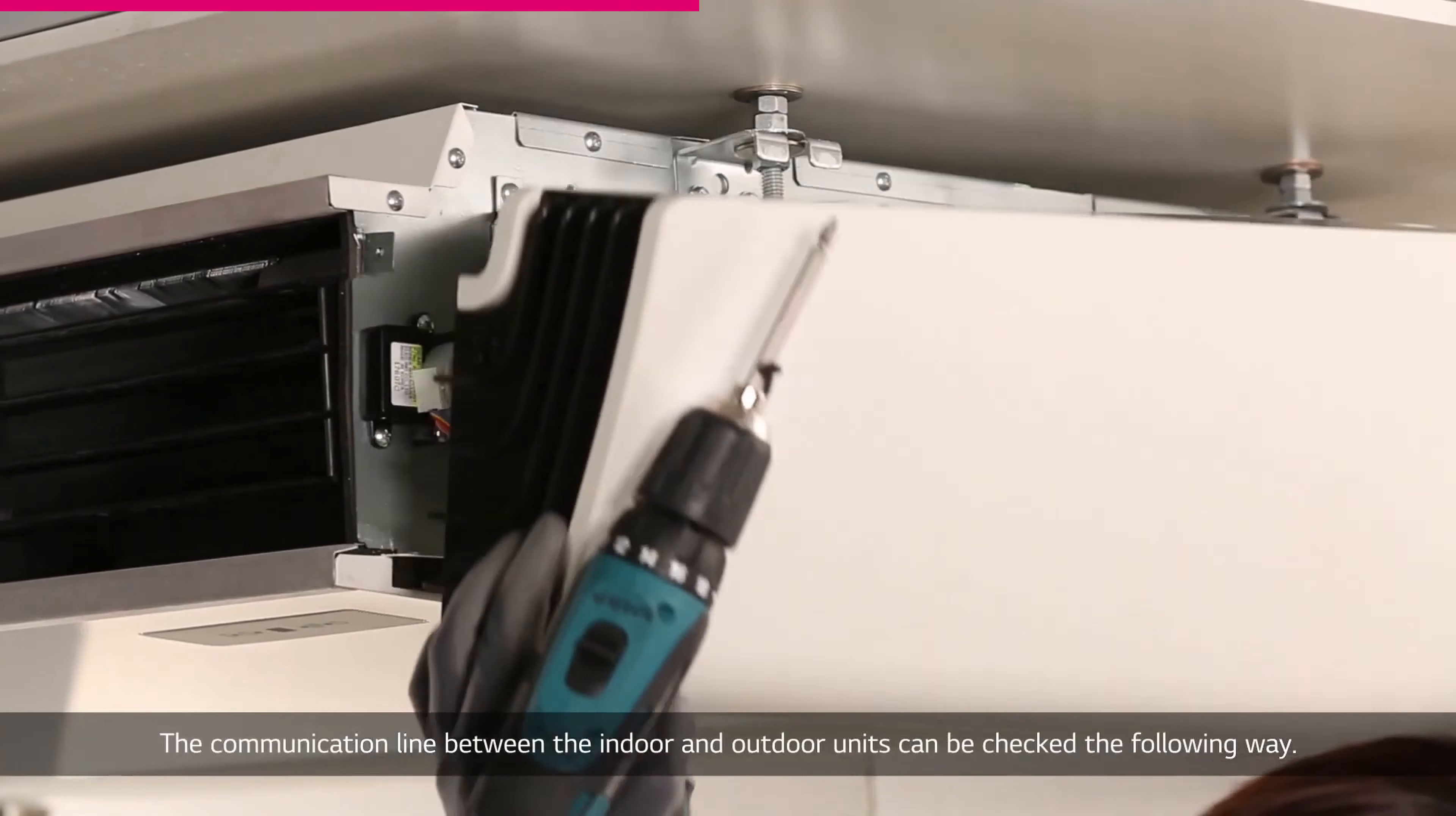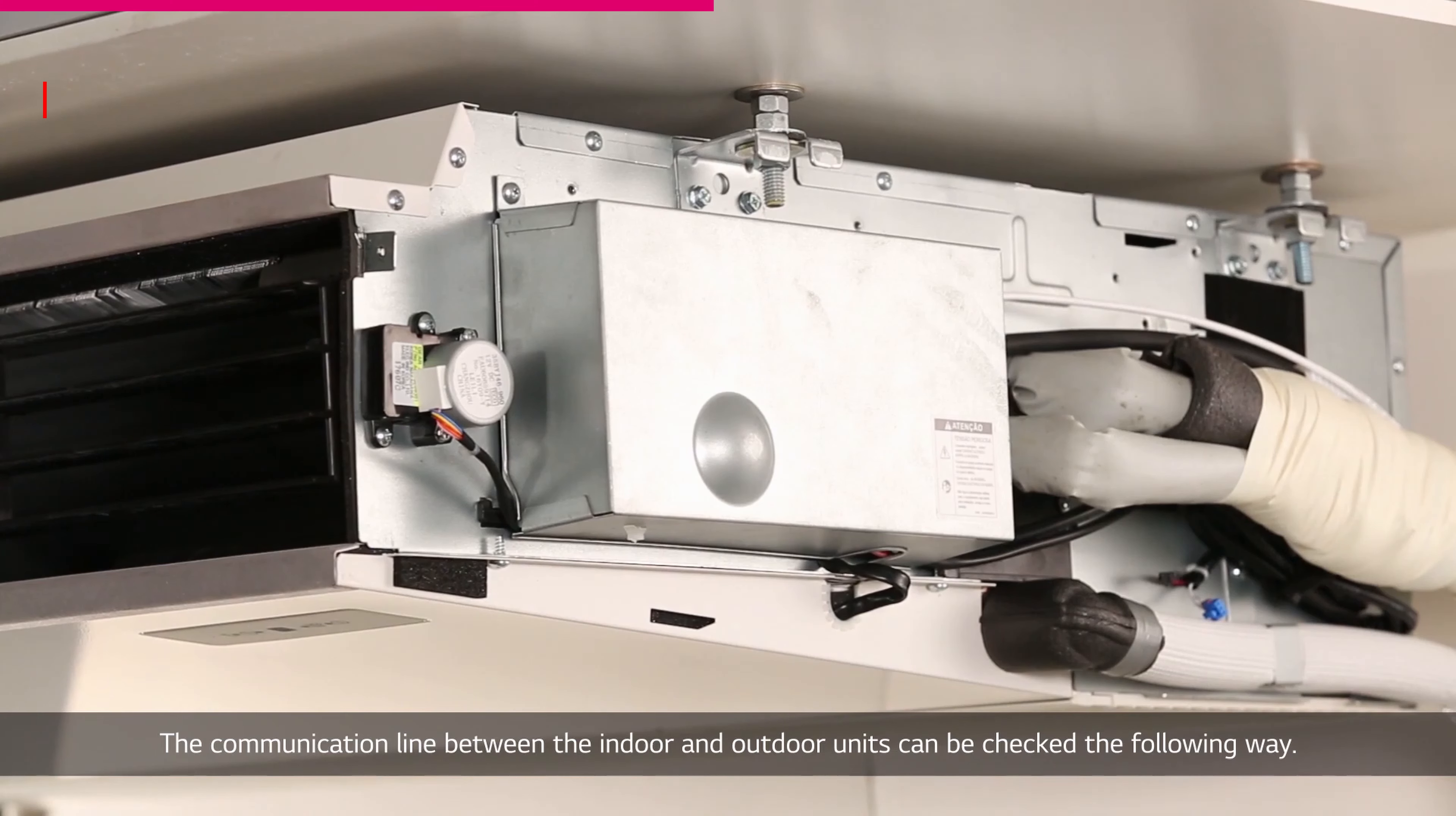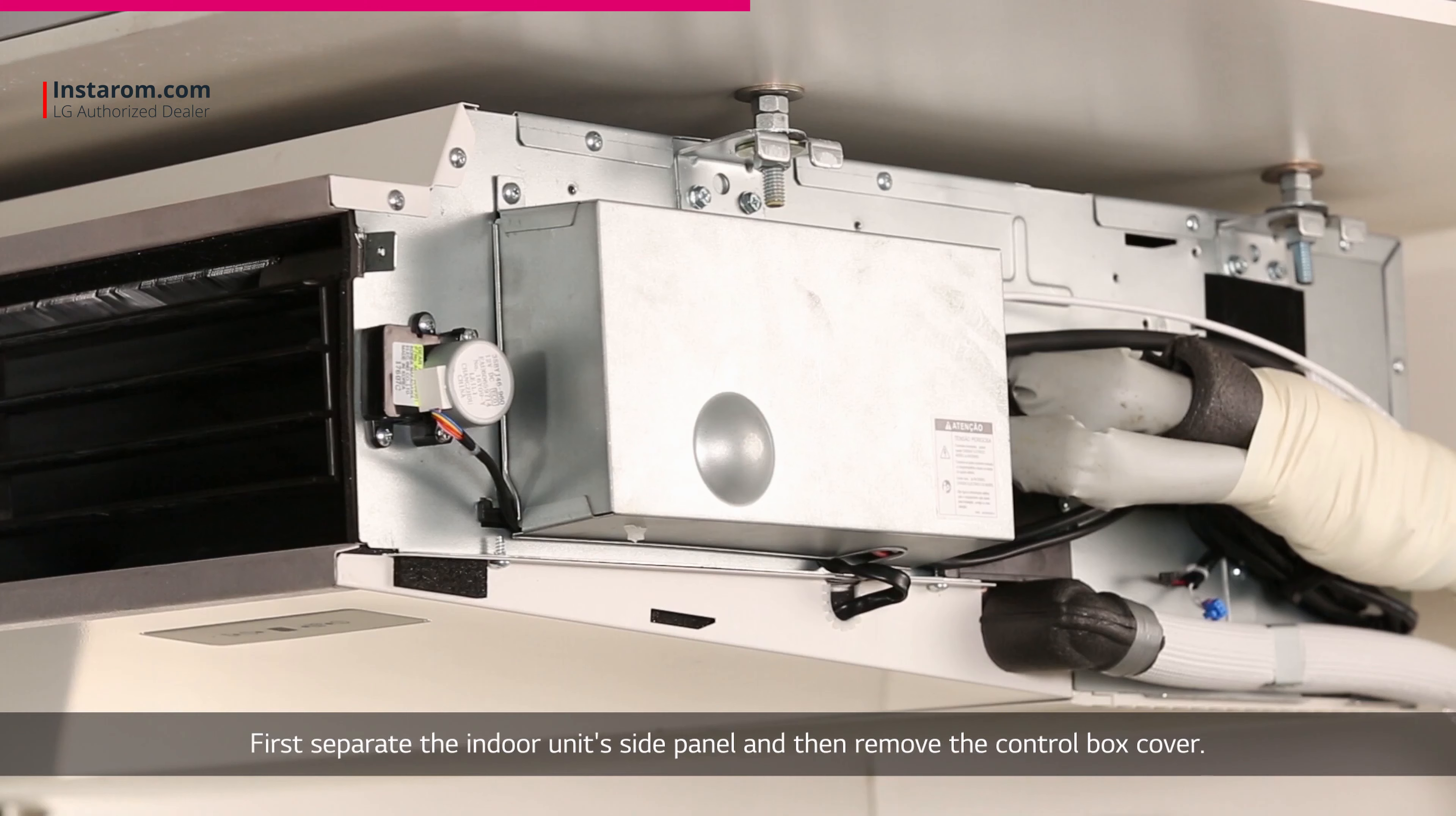The communication line between the indoor and outdoor units can be checked the following way. First separate the indoor unit side panel and then remove the control box cover.